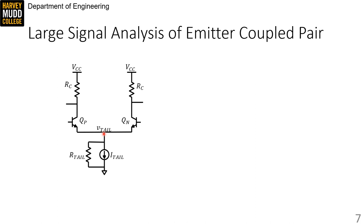This particular emitter-coupled pair is loaded with resistors, though you can attach other things on top of QPN or QN, and we'll see some examples next lecture.